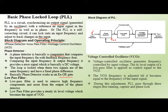The second component is the low pass filter. The low pass filter is used to remove high frequency components and noise. The output of the phase detector through the low pass filter provides a steady DC level voltage, which becomes the input of the VCO.